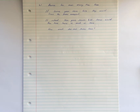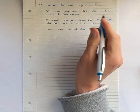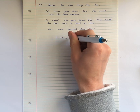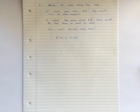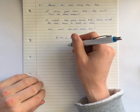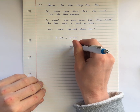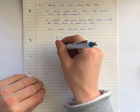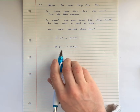Rani has more money than Hone. If Rani gave Hone $20 they would have the same amount, so R - 20 = H + 20. If instead Hone gave Rani $22, Rani would then have twice as much, so R + 22 = 2(H - 22).